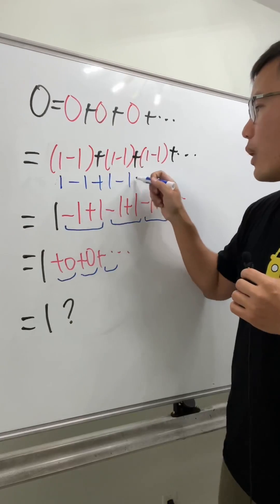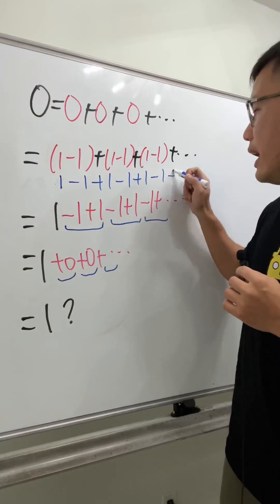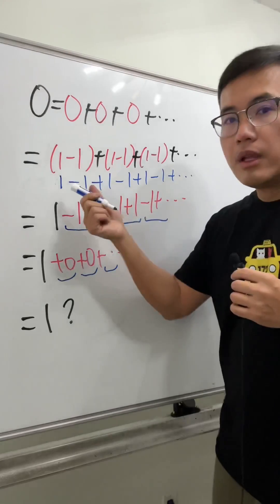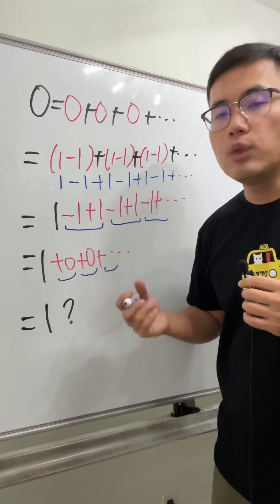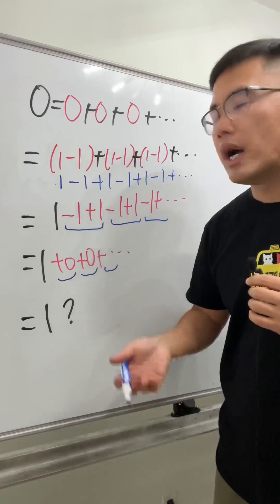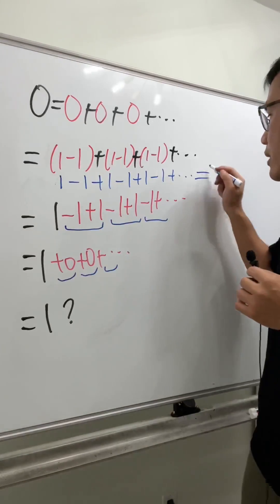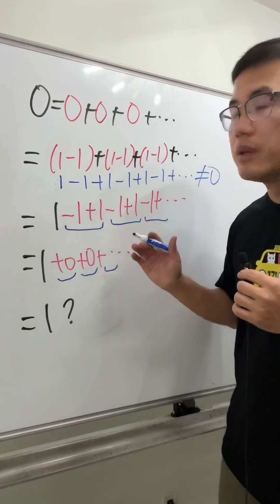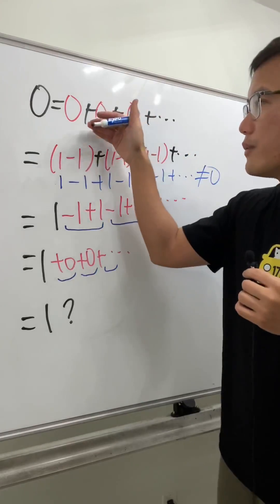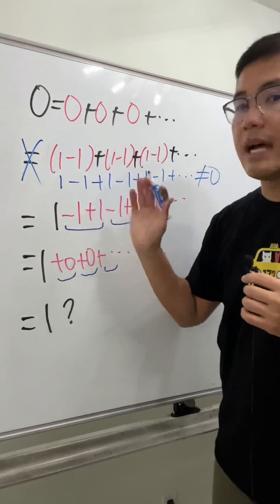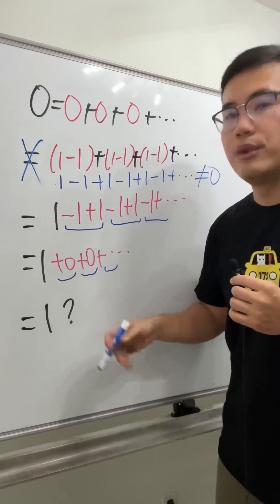And so on. This is a geometric series with common ratio equal to negative one. In fact, this does not converge—this certainly is not equal to zero. So the falsity is from here to here. This is not true, and of course, the rest, don't even look at it.